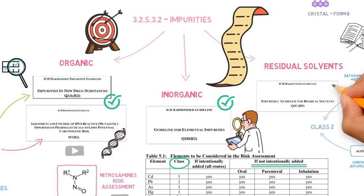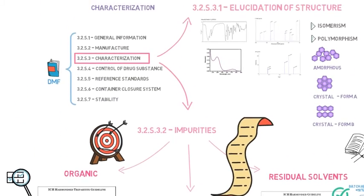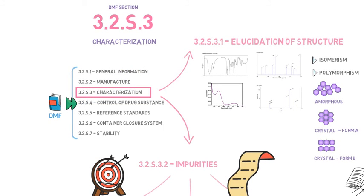And this was section 3.2.S.3, in the next video we will talk about section 3.2.S.4, which describes the quality control of the API. Stay tuned!